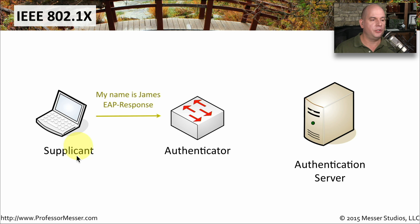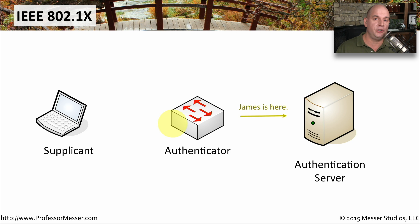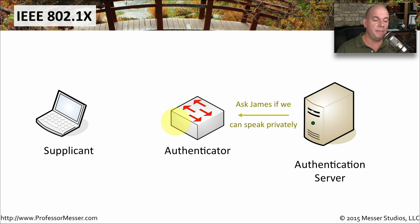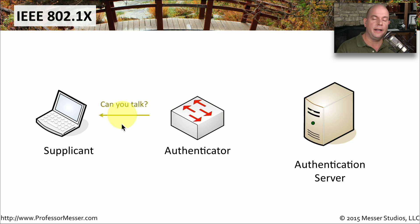Since our supplicant has just connected, it will send an EAP response back to the authenticator identifying itself — in this case, as James. The authenticator takes that information and communicates back to the authentication server, informing it that James has arrived on the network. The authentication server then determines if the device is something that can be allowed to authenticate, and sends a message back to the authenticator. The authenticator is always the middleman between the supplicant and the authentication server — those two devices never communicate directly with each other.